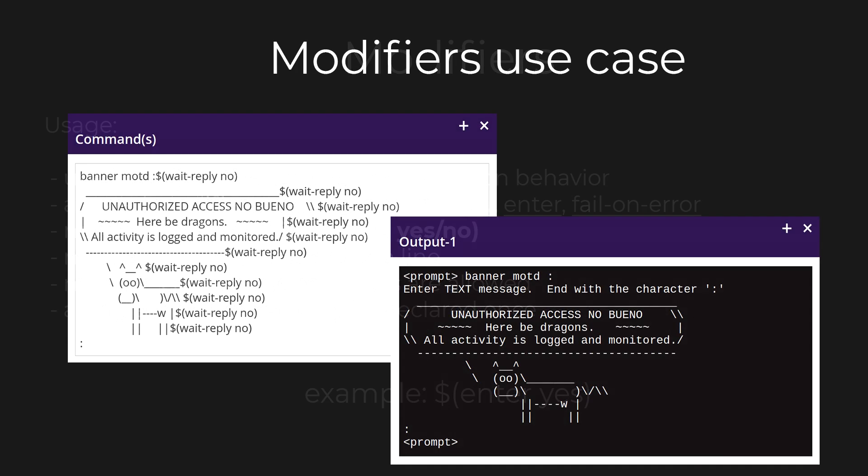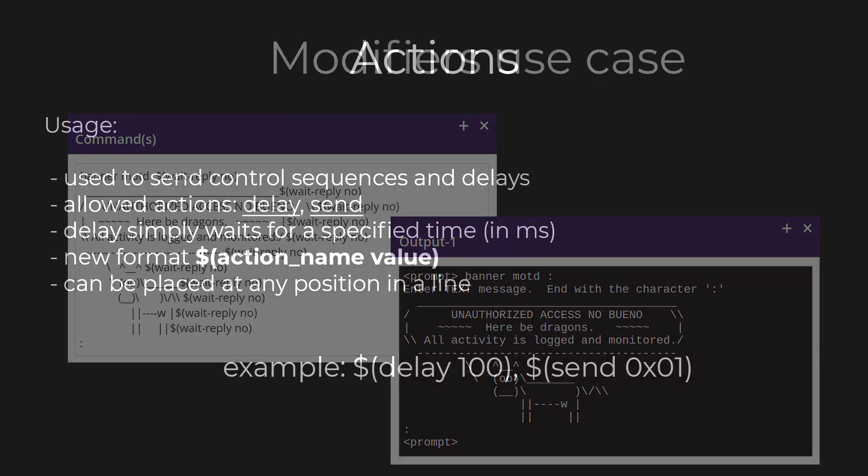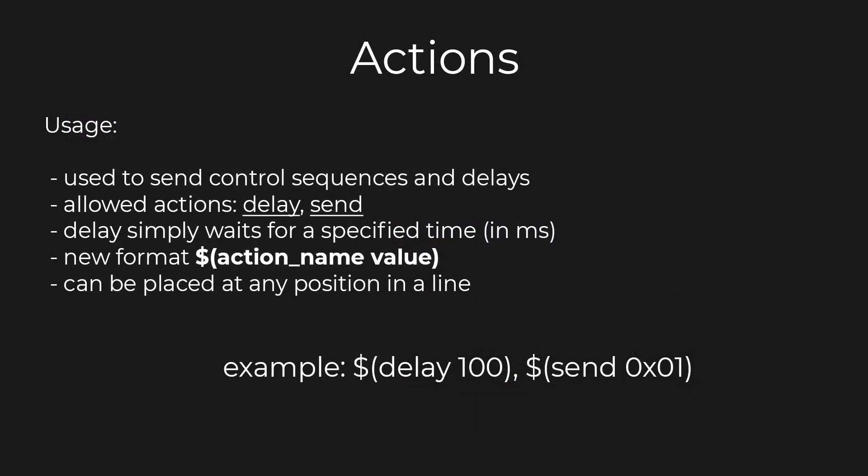2.4 brings a couple of new behavior modifiers. Check the full config push documentation for more info. Now on to actions. Actions are also two-word macros, and they are used to send control sequences and delays.